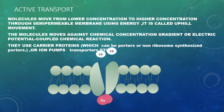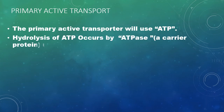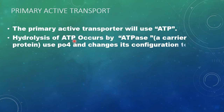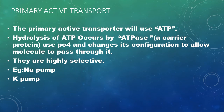In primary active transport, the transporter uses ATP directly. The protein involved is an ATPase — in the presence of ATPase, ATP is broken down into ADP plus inorganic phosphate. That phosphate is used by the ATPase carrier protein, which then changes configuration to allow molecules to pass through. These transporters are highly selective. Examples include the sodium pump, potassium pump, and calcium pump.